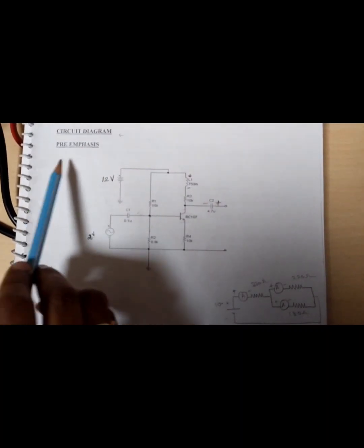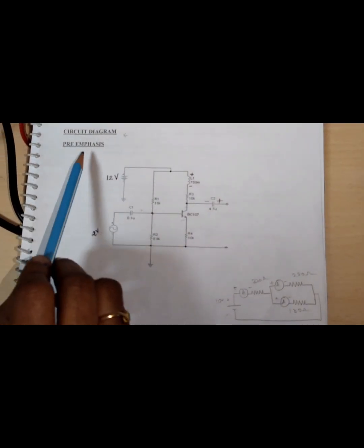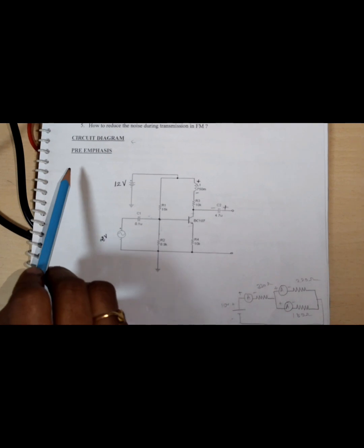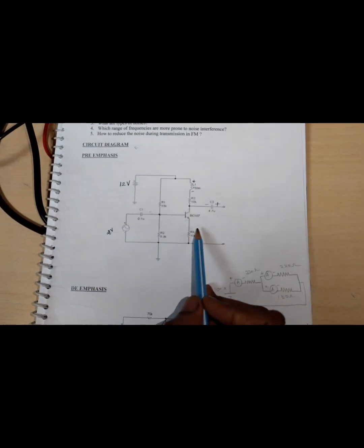The experiment is pre-emphasis and de-emphasis. In general, pre-emphasis is a process of enhancing the amplitude of the modulating signal in an FM transmitter circuit at high frequency, because at high frequency the FM signal is more prone to noise compared with low frequency. So in order to improve the signal-to-noise ratio, we are enhancing the amplitude on the transmitter side using the pre-emphasis circuit.